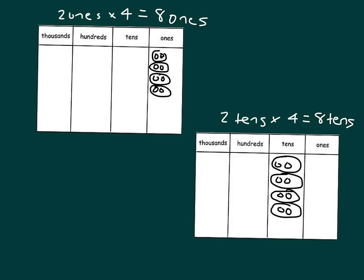Do you notice anything comparing these two multiplication problems, where we're multiplying two ones times 4 or two tens times 4? What do you notice about the number of place value disks that we used? They're the same. How many times larger is this one here than the first problem? It's 10 times larger.